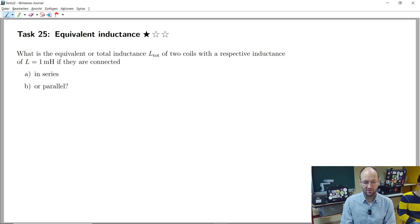So in this task 25, about equivalent inductance, we have two coils and each coil has a respective inductance of 1 mH and they are either connected in series or in parallel and we are interested in the total inductance of these two coils.